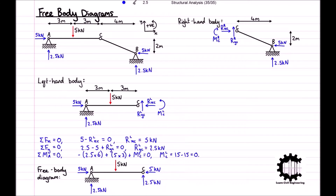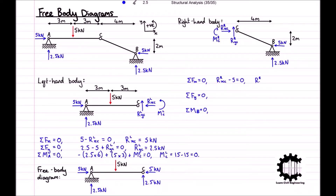To guarantee the structure is in equilibrium, member BC must be in equilibrium, and therefore the sum of all horizontal forces must be equal to zero, the sum of all vertical forces must be equal to zero, and the sum of all moments relative to point B must be equal to zero. Applying our forces to these equations and taking the x-coordinate direction to be positive, we get RXC minus 5 equals zero, so we can instantly see that RXC is equal to 5 kN. Taking the y-coordinate direction to be positive, we get 2.5 plus RYC equals zero, so we can see that RYC is equal to negative 2.5 kN.